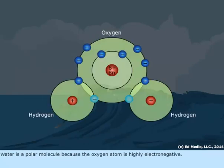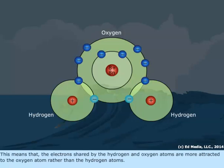Water is a polar molecule because the oxygen atom is highly electronegative. This means that the electrons shared by the hydrogen and oxygen atoms are more attracted to the oxygen atom rather than the hydrogen atoms.